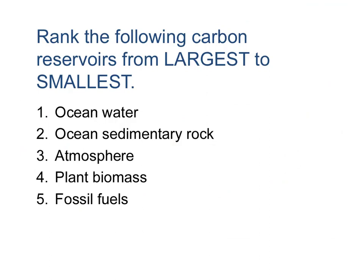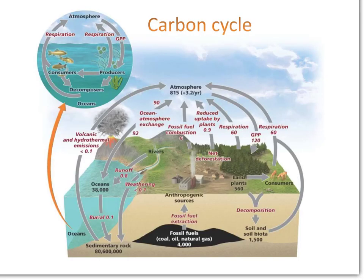Okay, welcome back. Let's see how you did. So number one is ocean sedimentary rock. And number two is ocean water. And then we have fossil fuels. And then four, atmosphere. And finally, plants, biomass. So let's take a look at that in this diagram here. So here's our sedimentary rock, bottom left. Down here. And next would be, and we can see 80 million units there. Oceans, 38,000 units. Fossil fuels, 4,000 units. Atmosphere, 815. And lastly would be land plants, 560.